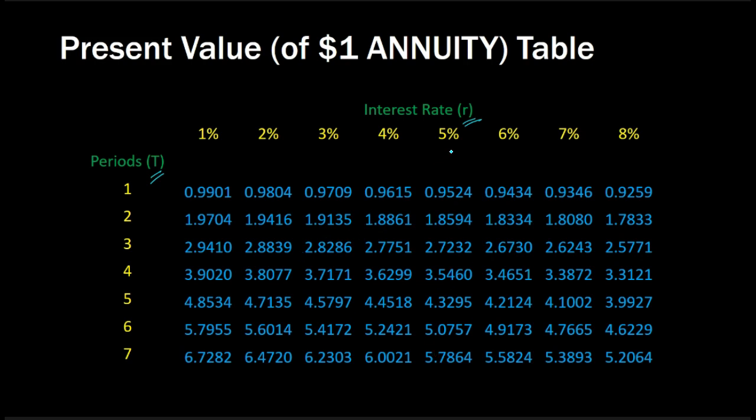For example, if the interest rate is 5% and the number of years you're looking at is 7, then this 5.7864 is basically the present value of a $1 annuity that you're receiving for 7 years.